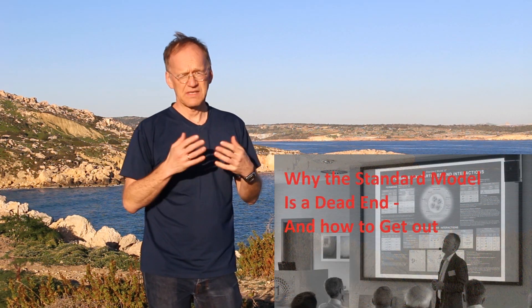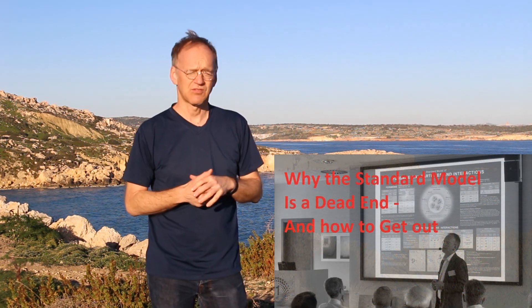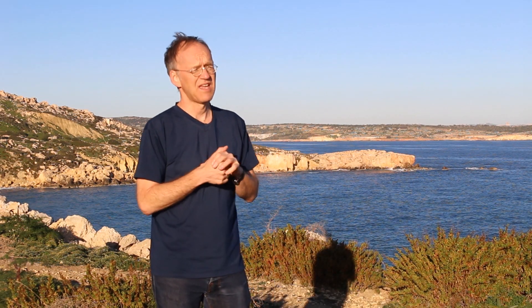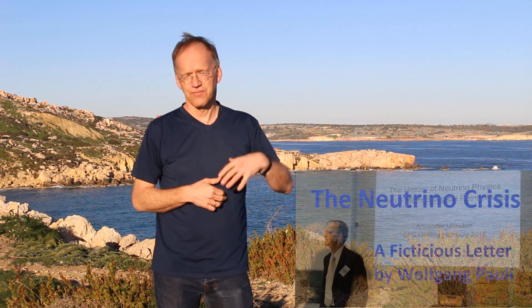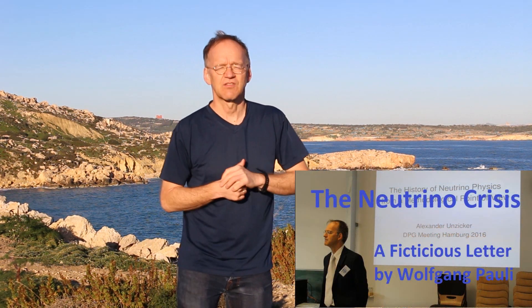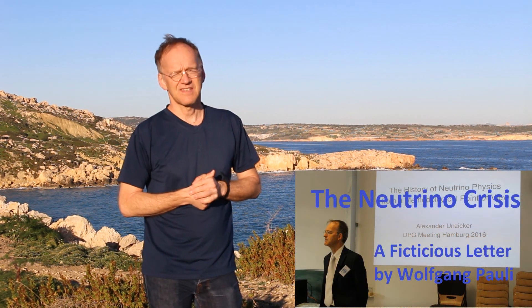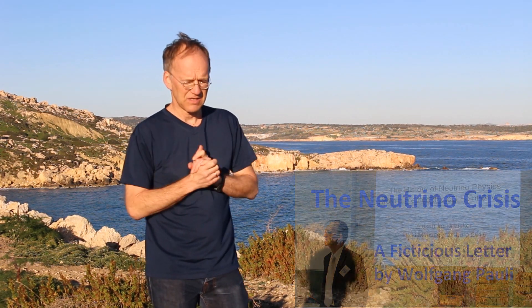I'm a critic of the standard model and all its concepts, and I think neutrino physics has become a mess — with three different types: electron neutrinos, muon neutrinos, and tau neutrinos, and even oscillations. Now they are postulating a fourth, fifth, or even sixth generation. I think this is a kind of epicycle model, though I might be mistaken.